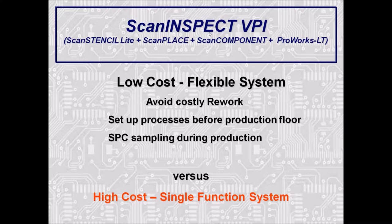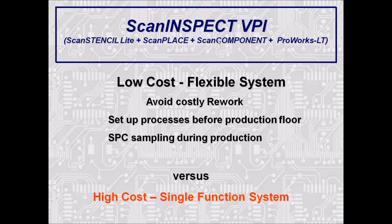The intent is to have a high-level overview of the hardware before seeing the system running. The ScanInspect VPI system consists of several products: the ScanStencil Light inspection product, the ScanPlace board-level programming product for reference designators and centroids, the ScanComponent product which creates vision files for components including lead pitch and body dimensions, and a work instruction product. Any one of these packages can be purchased separately, and you can upgrade and add capabilities.